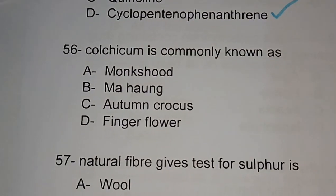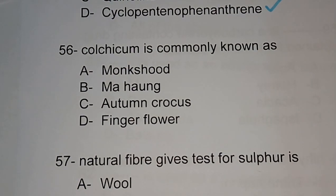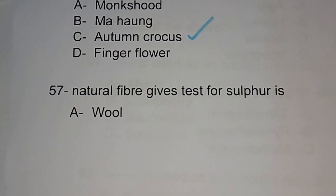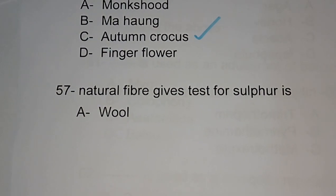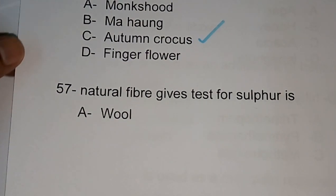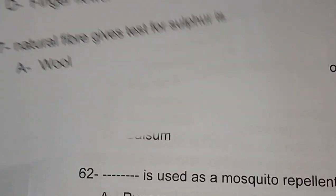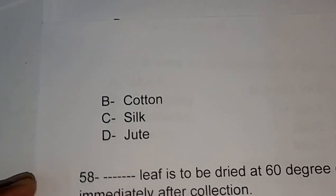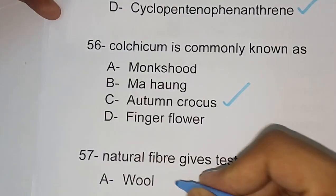Question number 56: Colchicum is commonly known as — monk's hood, maha, autumn crocus, or foxglove. Autumn crocus is the correct answer; Colchicum is also known as autumn crocus. Question number 57: which natural fiber gives a test for sulfur? Options are wool, cotton, silk, jute. The correct answer is wool.